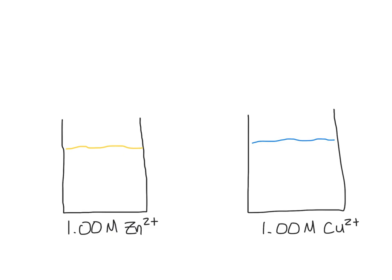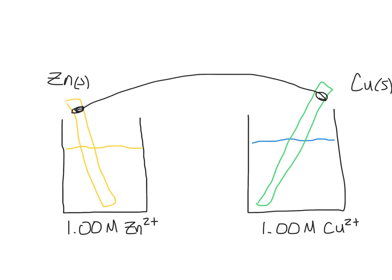Next, I'm going to put actual wire electrodes, or bars of zinc and bars of copper, into the respective solutions. So here we have an actual zinc solid bar, and here we have an actual copper solid bar. I'm going to connect those with a wire to allow for the flow of electrons.